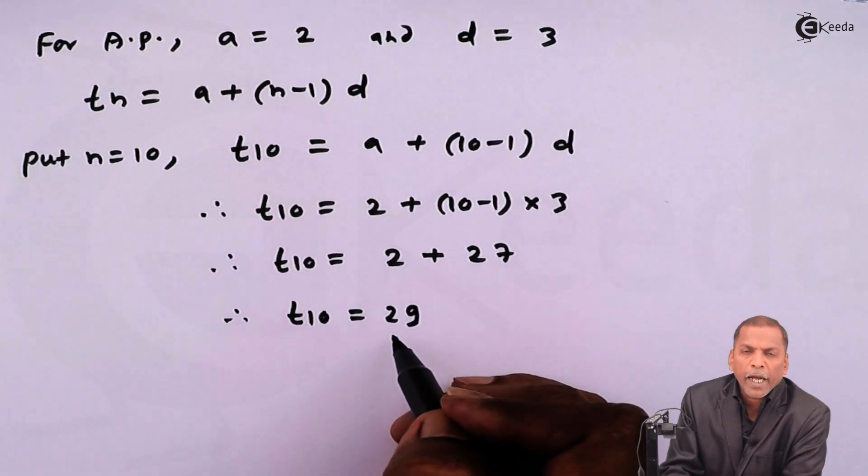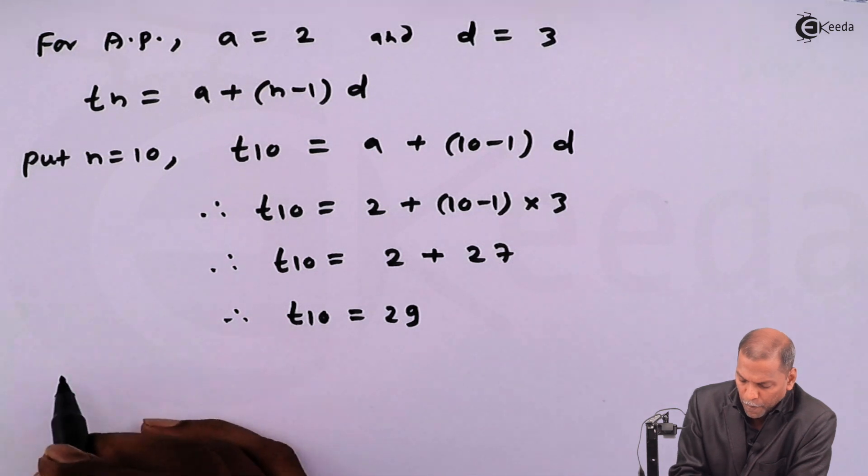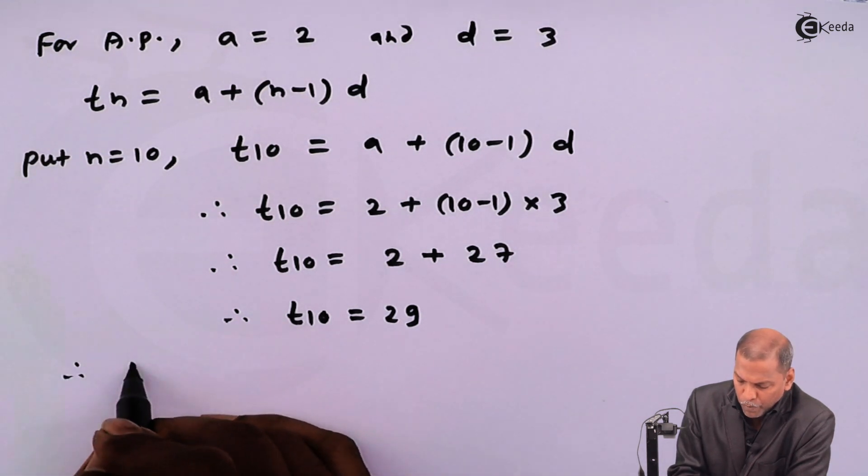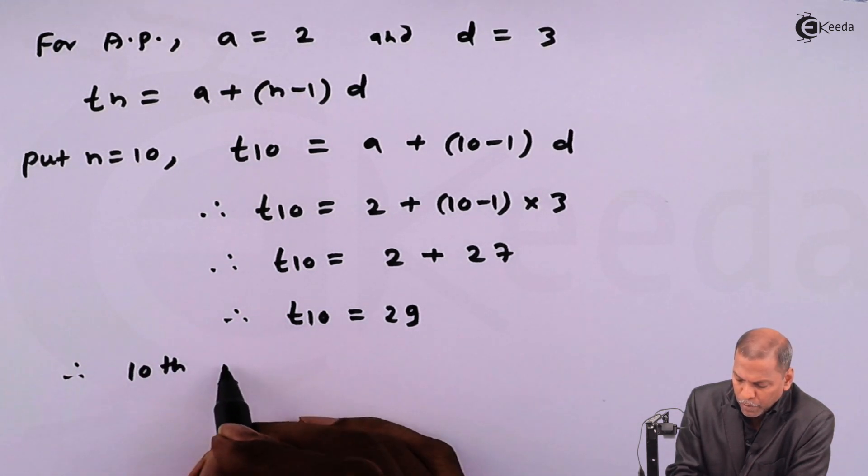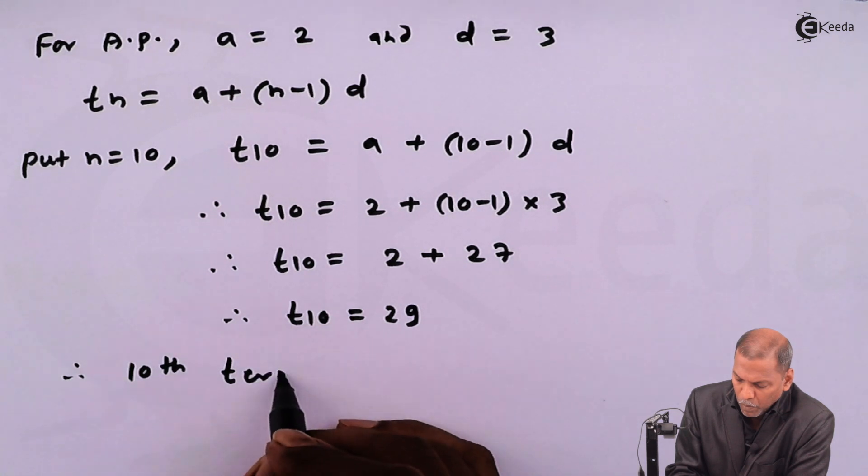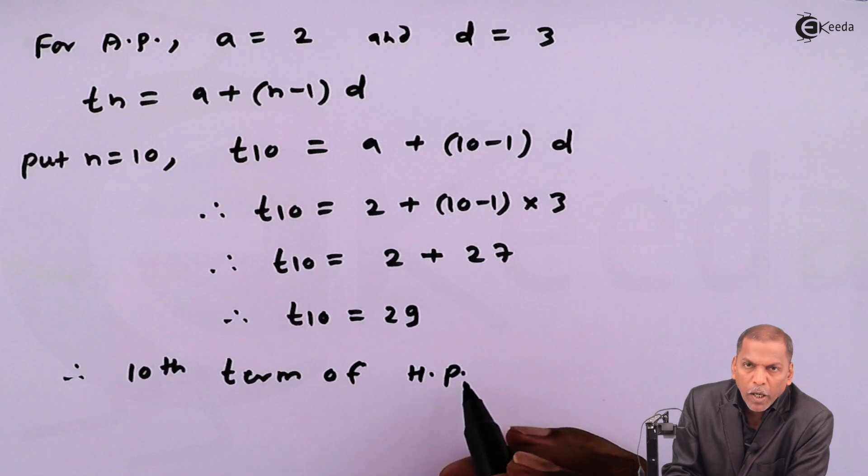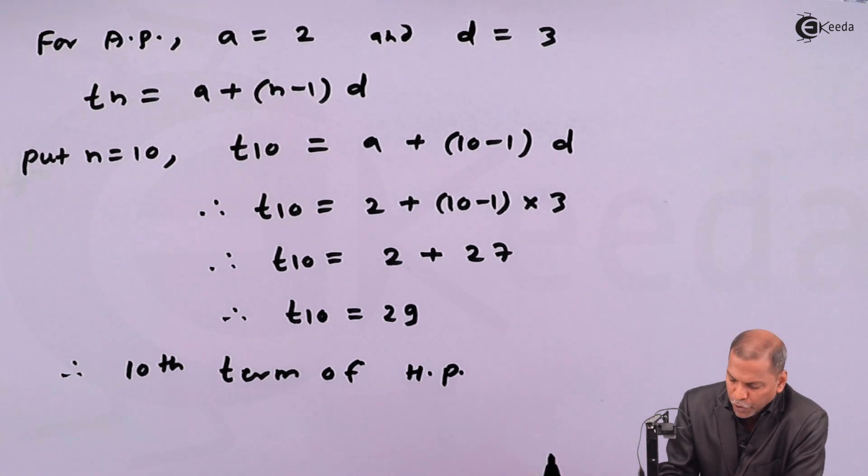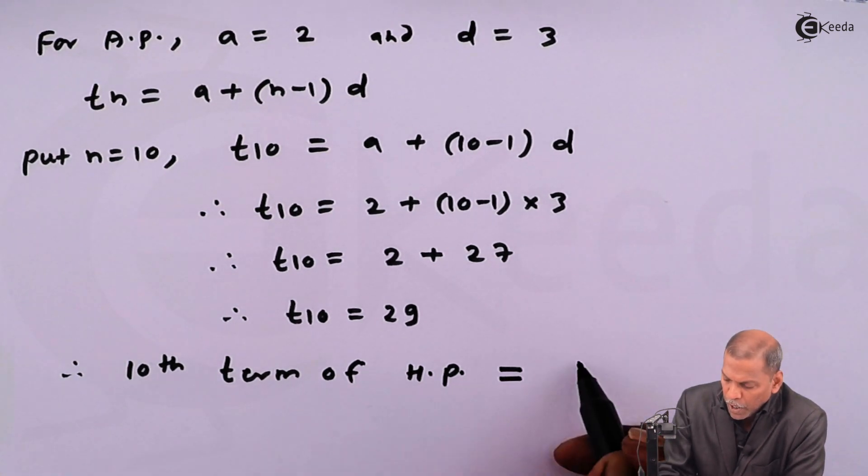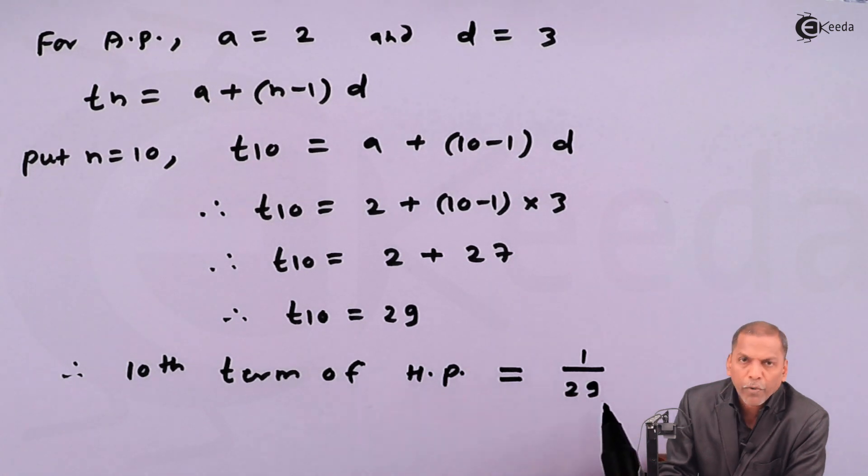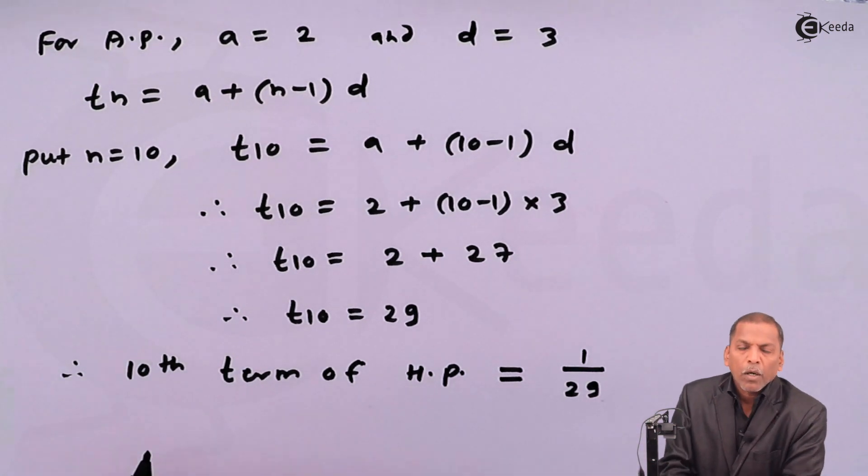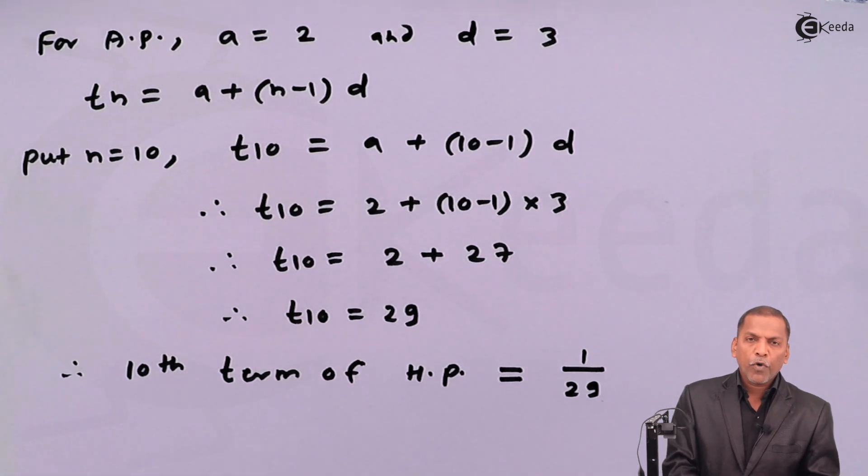So this is 10th term of AP. And therefore, 10th term of HP, that is harmonic progression, is equal to one upon 29. This is required solution for the given problem. Thank you.